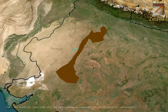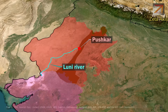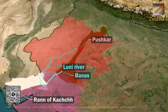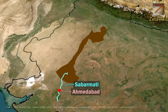Another important river originating from the Aravalli is the Luni river, which originates from the western slopes of the Aravalli near Pushkar. The Luni river flows through Rajasthan and Gujarat and finally flows into the Rann of Kutch. There is also a West Banas river which originates from the southern Aravalli hills in Sirohi district and flows through Gujarat to finally flow into the Rann of Kutch. The Sabarmati river also originates from the southern Aravalli range and flows into the Gulf of Khambhat; the city of Ahmedabad is located on the banks of the Sabarmati river.